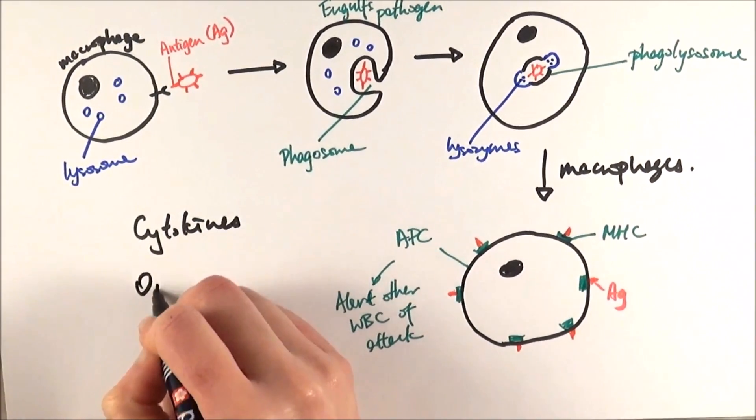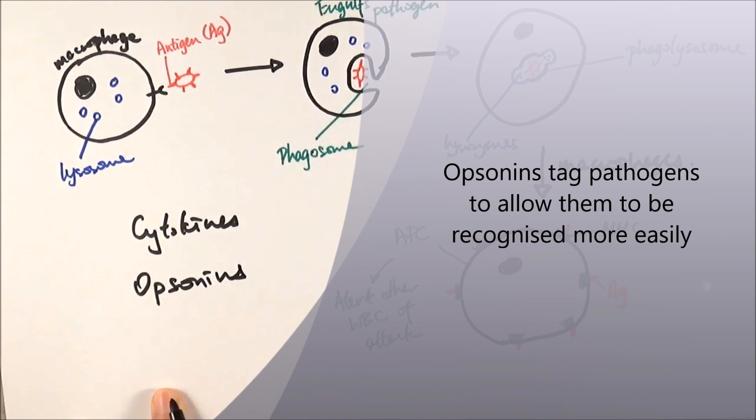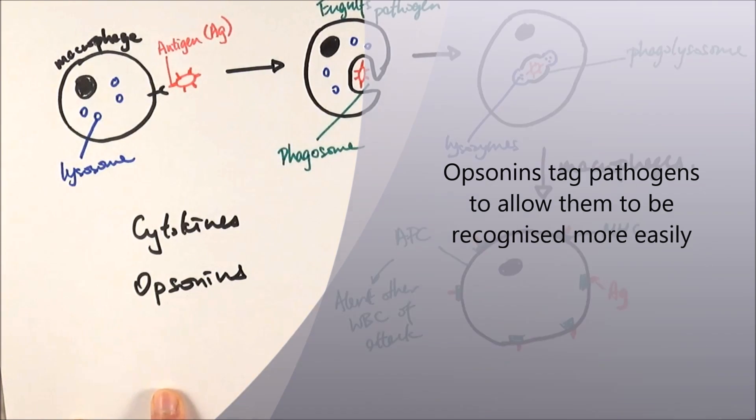And they also got something called opsonins, which goes off to tag pathogens to increase their recognition.